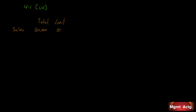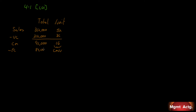We have sales of $312,000 at a per unit cost of $52, minus variable costs of $216,000 at $36 per unit. Our contribution margin is $96,000 and our contribution margin per unit is $16. Minus our fixed costs of $84,000 gives us an operating income of $12,000. Note: operating income and operating profit mean the same thing — they're interchangeable.